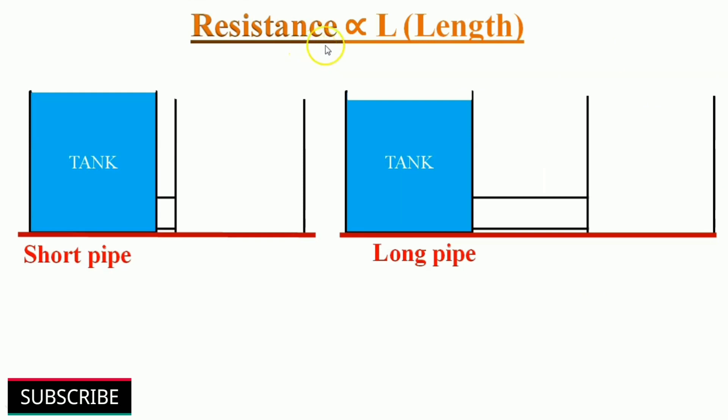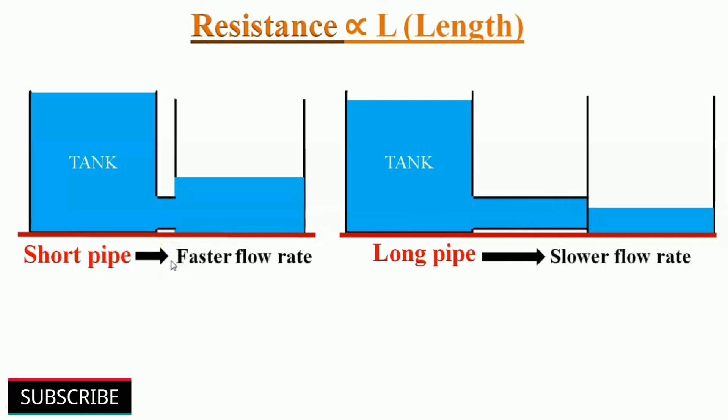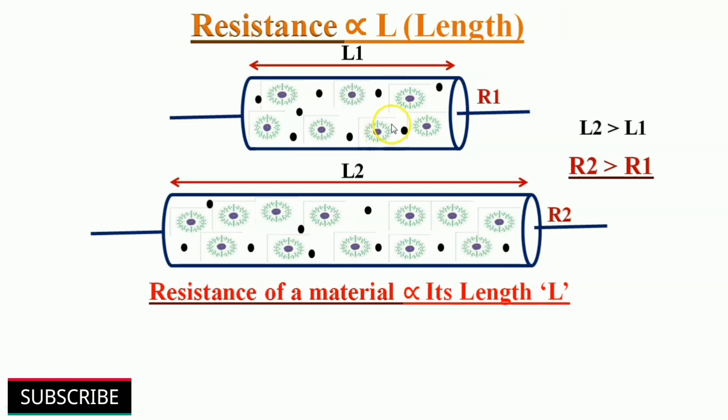Now the next factor, length of a material. Here we have used shorter length pipe on the left side and longer length pipe on the right side to transfer water from filled tanks to empty container. As we know, the container on the left side will fill up faster than the right side because of the higher flow rate of water in the shorter length of pipe. The same thing will happen to the flow of electric current. When you have a longer length of pipe, the free electrons have to travel more distance, so the higher number of obstacles it faces through its path. Therefore, resistance of a material is directly proportional to its length.